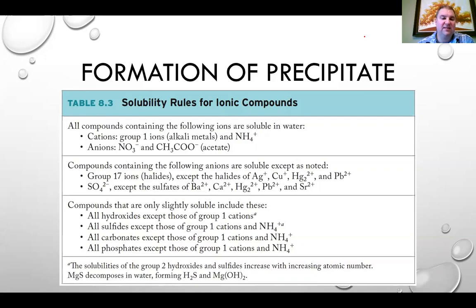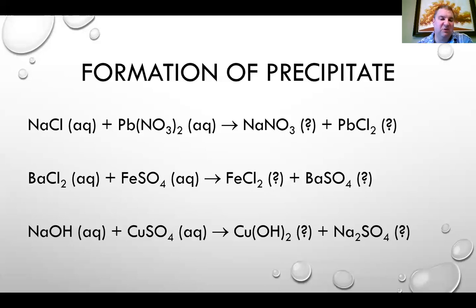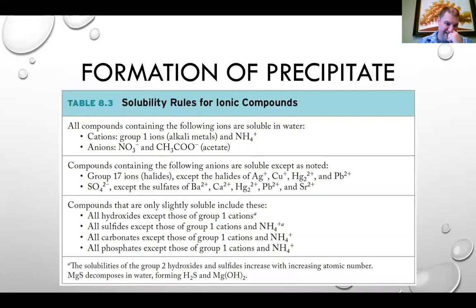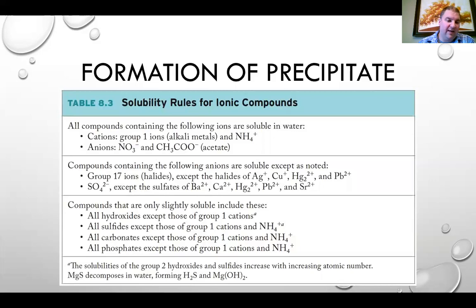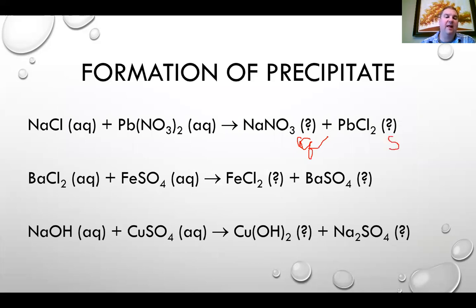Applying the rules: start with sodium chloride and lead(II) nitrate both aqueous. Swapping cations gives sodium nitrate and lead(II) chloride. Sodium nitrate has two reasons to be aqueous — sodium is an alkali metal and nitrate is nitrate. Lead(II) chloride: chlorides are halides and mostly soluble, but lead(II) is one of the exceptions. So lead(II) chloride is a solid — that is our precipitate.